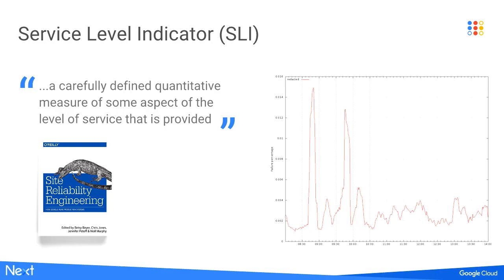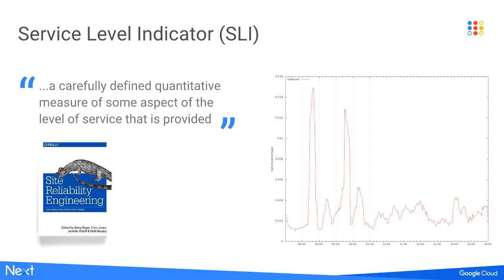This brings us to the concept of a service level indicator. The SRE book says: 'a carefully defined quantitative measure of some aspect of the level of service that is provided.' Basically, it's something you can measure about your service. In this example, I've got a graph showing an error percentage — specifically, the percentage of requests resulting in a 500-class error for a fairly straightforward HTTP request-response service.